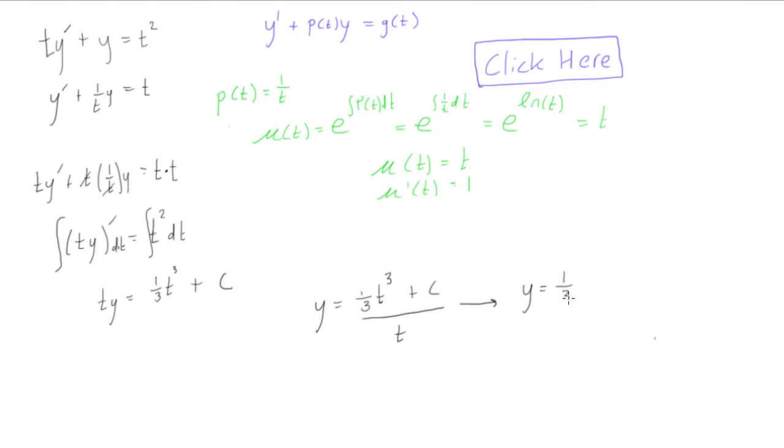And the other way we could maybe write this is y is equal to 1 third t squared plus c over t. The c is an arbitrary constant. So here we have this. Now what we have here is the general solution to this differential equation.